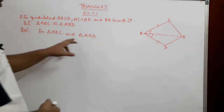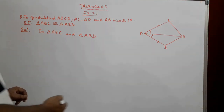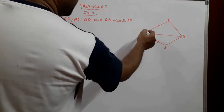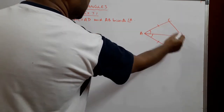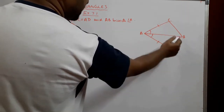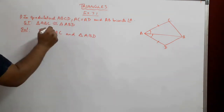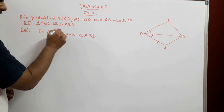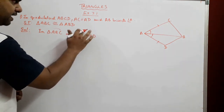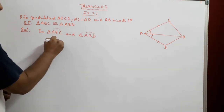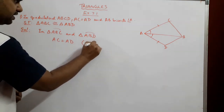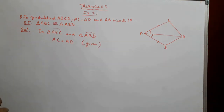In triangle ABC and triangle ABD, the first thing we have been given is that AC is equal to AD. AC belongs to triangle ABC and AD belongs to triangle ABD, so they are corresponding sides. The reason we write is: given. So we have got one corresponding side equal.